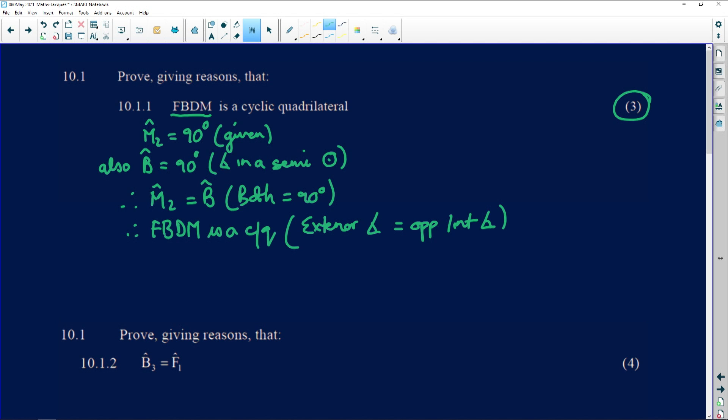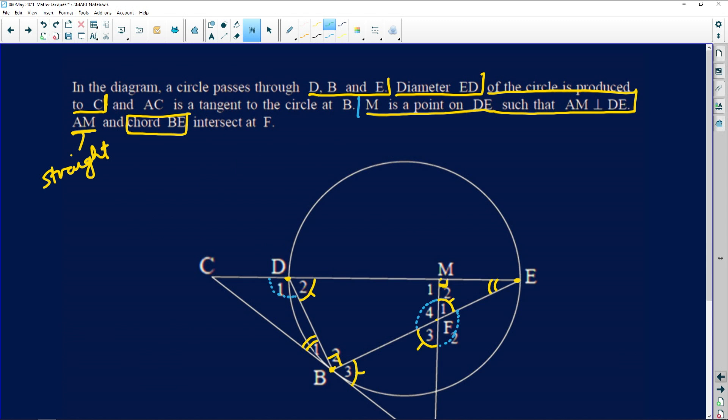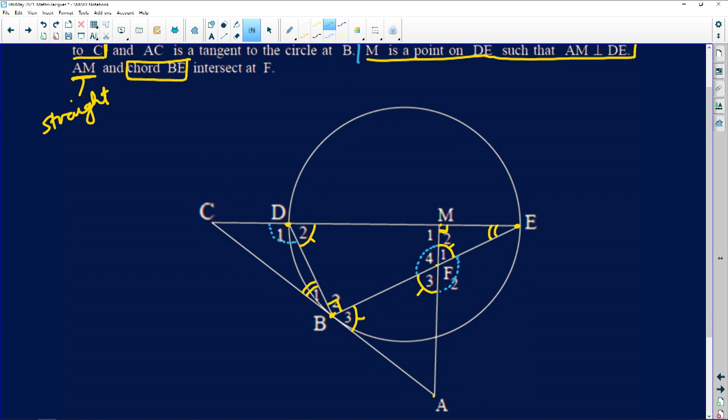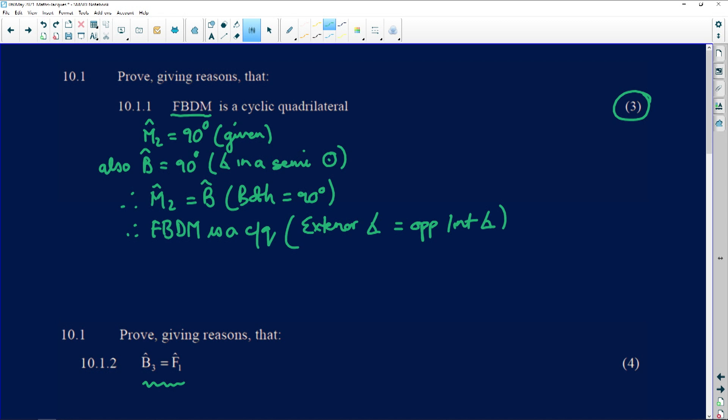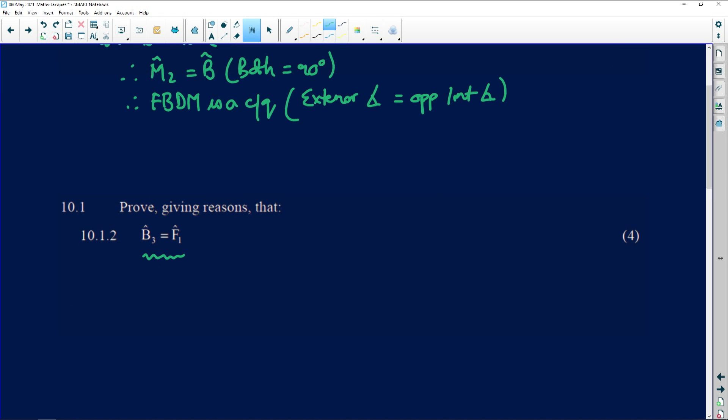Prove that, by giving reasons, that B3 is equal to F1—and please note that this is for four marks. Now B3 here is equal to F1 that lies over there. Well, this became a cyclic quadrilateral. Okay, so this angle became equal to D2 because of exterior angle of a cyclic quad. And B3 became equal to D2 because of the tan chord theorem.